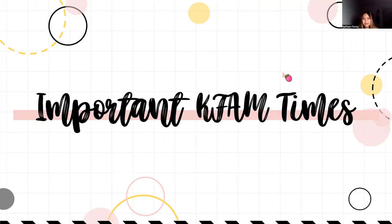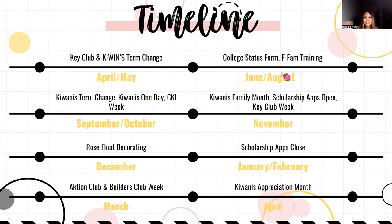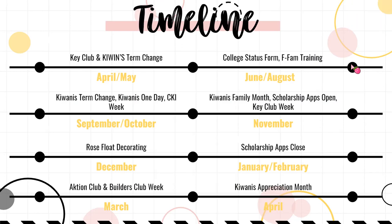Here is the important K-Fam timeline: April and May — term changes for Key Club and Key Wins. June and August — College Status Forum and K-Fam training. September and October — Kiwanis term change, Kiwanis One Day, and Circle K International Week. November — Kiwanis Family Month, scholarship apps open, and Key Club Week. December — Rose Float decorating. January and February — scholarship applications close. March — Action Club and Builders Club Week. April — Kiwanis Appreciation Month. This overview helps you place your collaborations within the timeline.